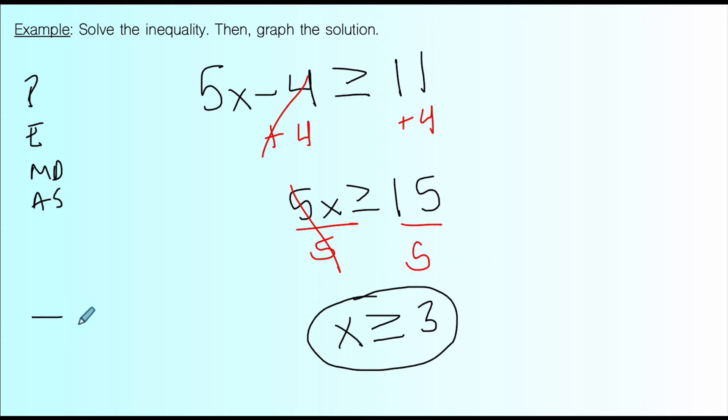And I'm going to model this on a graph because it asks us to do that as well. So to graph it, set up the number line and we're going to have a closed circle here because it can be equal to 3. And since it's all the values that are greater than 3 as well, it's going to be an arrow pointing towards the right.